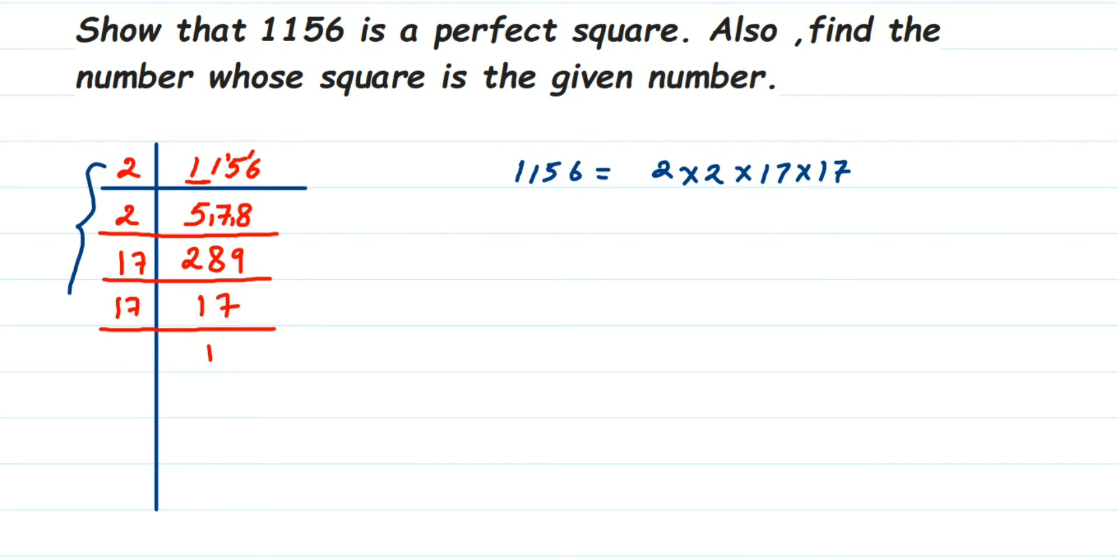Now if the number is a perfect square, you will see that the prime factors are in pairs. This 2 is in a pair, and 17 is also in a pair. If it's not a perfect square, then the factors will not be in a pair; there will be one or two factors which are single. You can see here they're forming perfectly in pairs, which means we can say yes, 1156 is a perfect square.